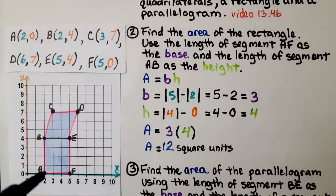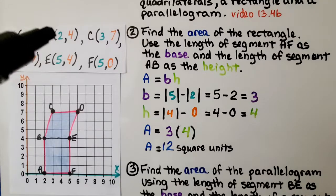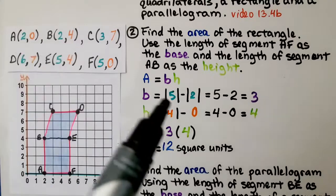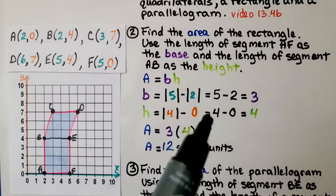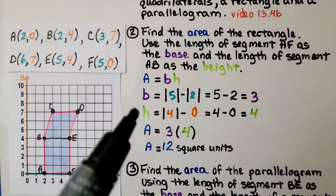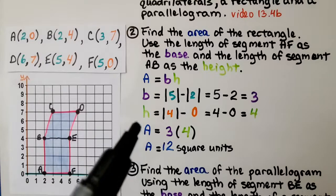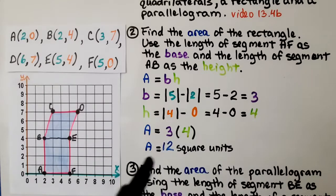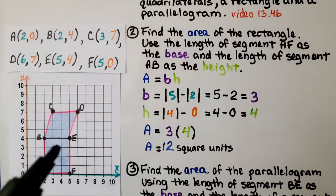Now we're going to use A, B for our height. A is at (2, 0) and B is at (2, 4). The X values are the same, so we use the Y coordinates: the absolute value of 4 minus 0, which is 4. The area equals base times height, so we do 3 times 4. The area of this rectangle is 12 square units.